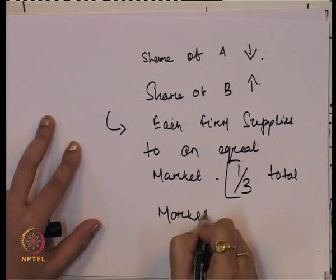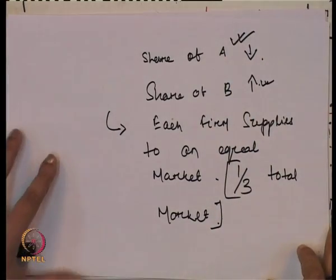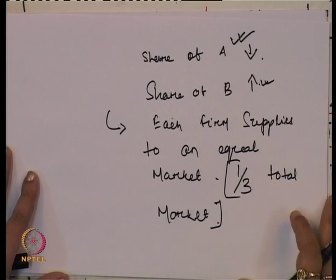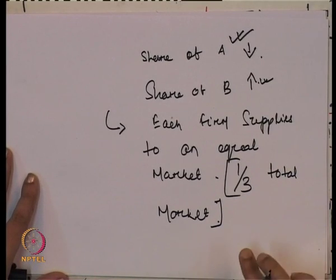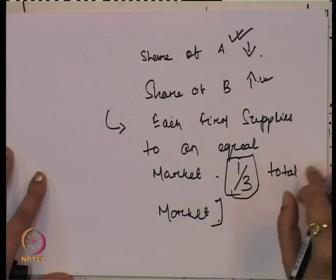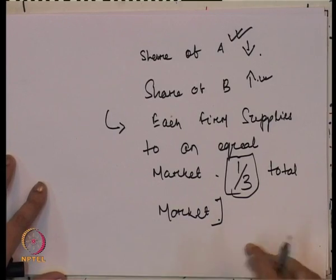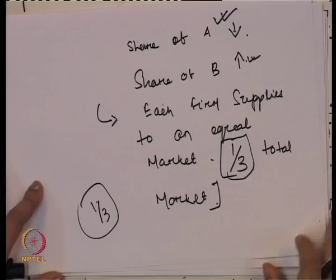Initially the share of A was higher than the share of B. This action-reaction pattern continues, and finally each firm reaches a situation where they produce one-third of the total market. One-third is produced by A, one-third by B, and the remaining one-third is not produced by either firm.